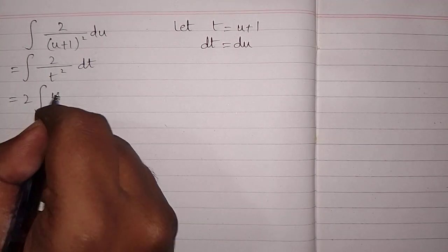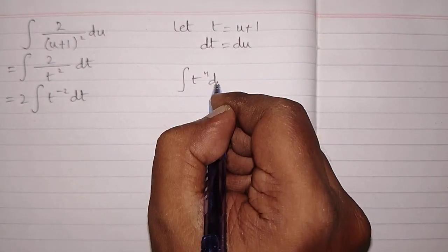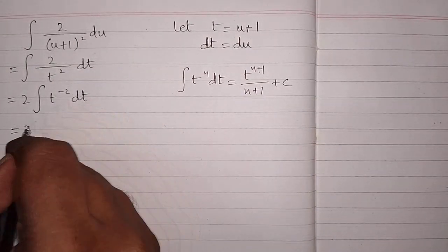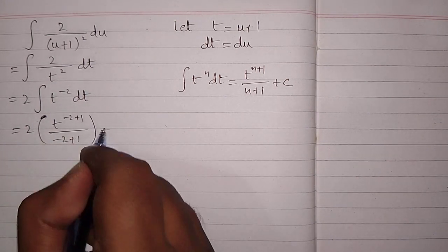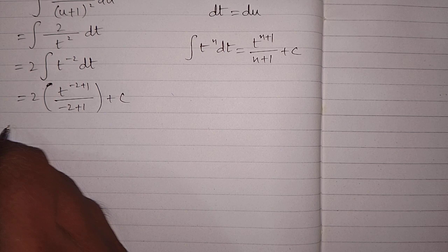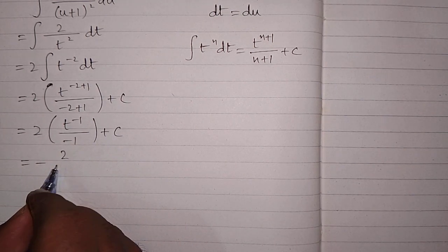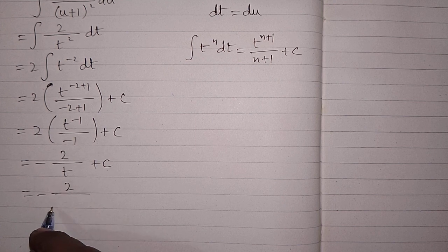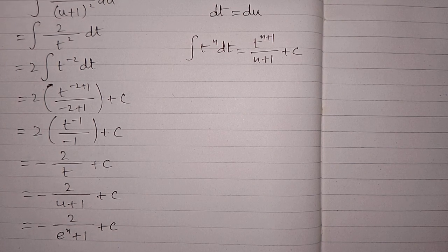This becomes 2 times the integral of t raised to the power minus 2, dt. Applying the power rule — integral of t to the power n dt equals t raised to the power n plus 1 upon n plus 1 plus c — we get 2 times t raised to the power minus 1 upon minus 1 plus c, which equals minus 2 upon t plus c. Substituting back t equals u plus 1 and u equals e to the power x, the required answer is minus 2 upon e to the power x plus 1, plus c, where c is the constant of integration.